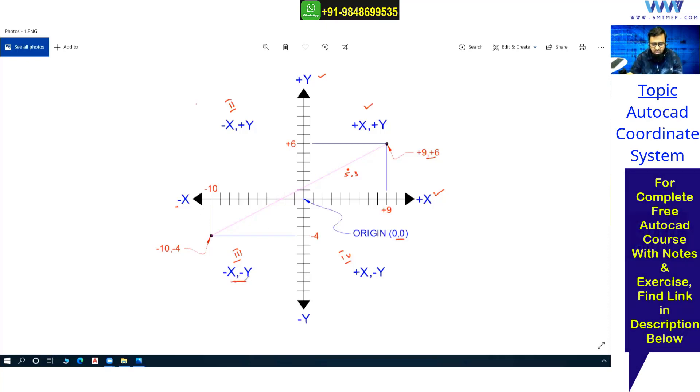In the fourth quadrant, it's plus X and minus Y, because from the origin, the right side is positive, but downside is negative. So plus X, minus Y.